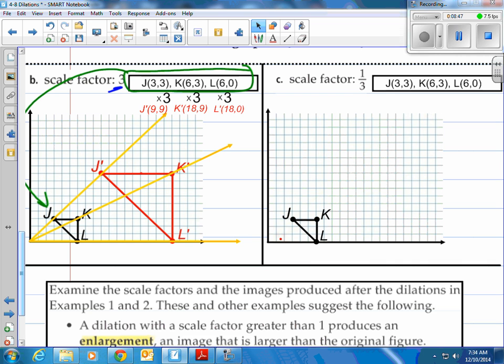Alright, let's take a look at C here. Same thing. We have a scale factor of one-third. We're going to multiply that by each one of those numbers right there. And of course, we're going to get the points. J-K-L is already drawn for you. But notice when you multiply by one-third, everything gets smaller here. So now you have 1-1, 2-1, and 2-0. So here's what that looks like.